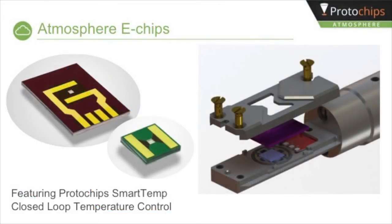The patented Atmosphere e-chip devices are a core component of the Atmosphere system. An e-chip pair creates the environmental cell inside the holder tip. One e-chip features an amorphous silicon nitride window, and the second features a proprietary ceramic membrane, which serves as both a sample support and heat source. The silicon nitride window is electron-transparent and provides a strong barrier to reliably contain gases up to one atmosphere for extended periods. The Atmosphere software controls the thermal e-chip device and uses Protochips' SmartTemp closed-loop control to automatically compensate for gas type or pressure.